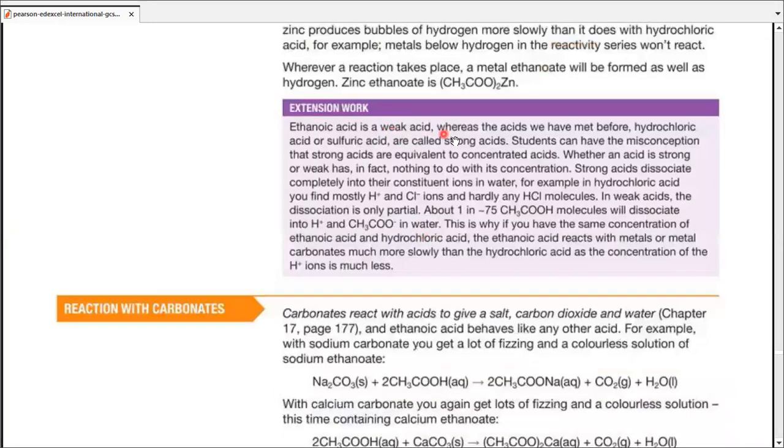So moving on. For extension work, ethanoic acid is a weak acid. When we talk about weak acids, we do understand weak acids do not dissociate completely in water. And strong acids completely dissociate. Let's take an example to make sure that we understand it. HCl is a strong acid. When we dissolve it in water, it is converted into H+ ion and Cl- ion. Similarly, ethanoic acid, when dissolved in water, is converted into H+ ion plus negative ethanoate ion, which we just discussed.